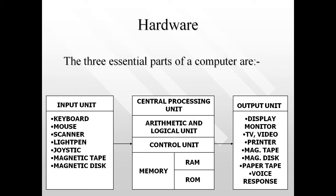Moving forward, we have a light pen — an input device used to give input to the computer system. You might have seen that during a cricket match, commentators point out where a player should be moved, marking positions on screen. They are using a pointer to draw on the screen, and this is done using a light pen. You can use a light pen to give instructions to the computer system.